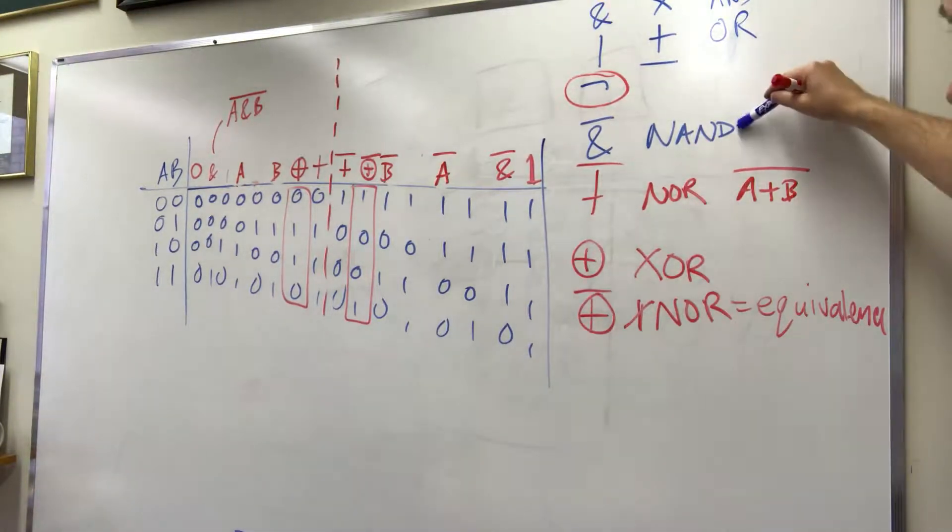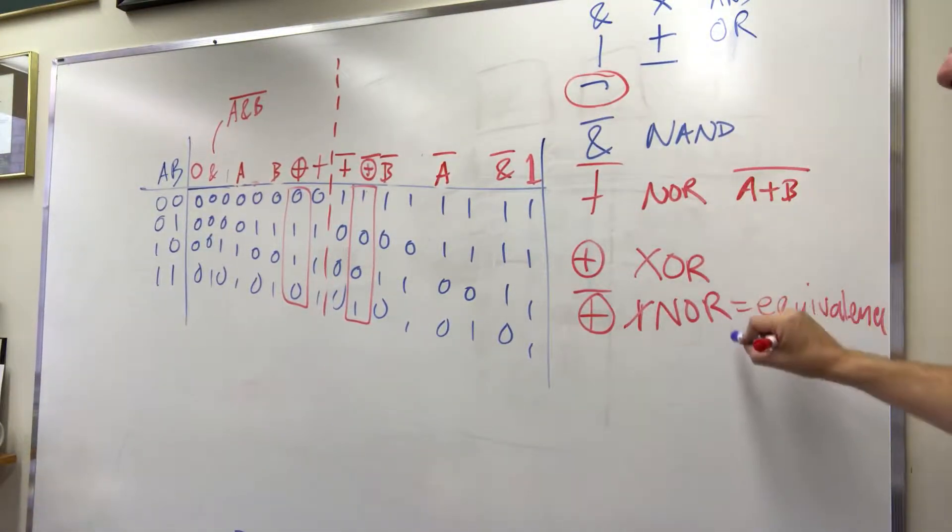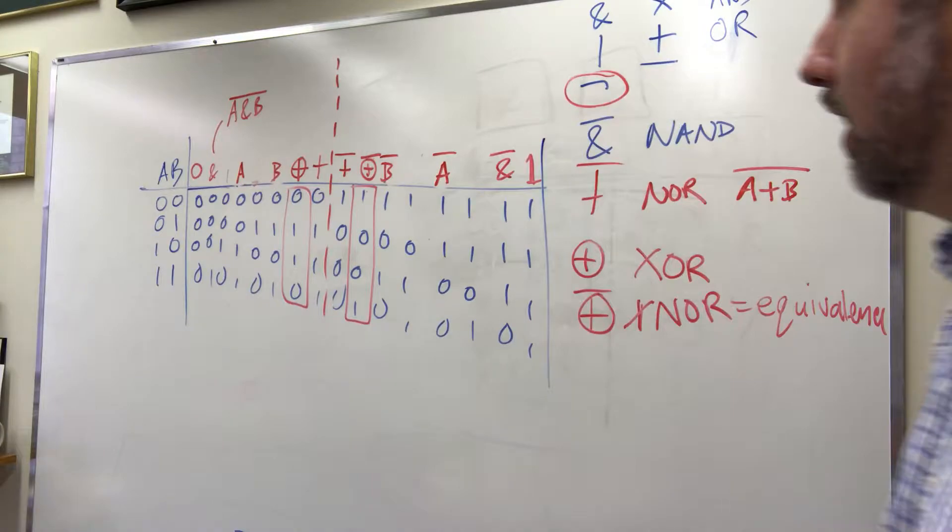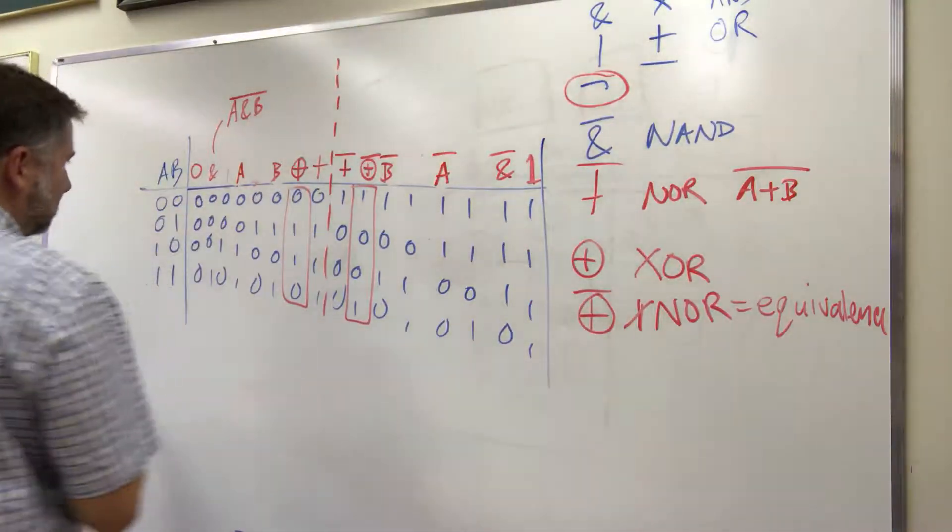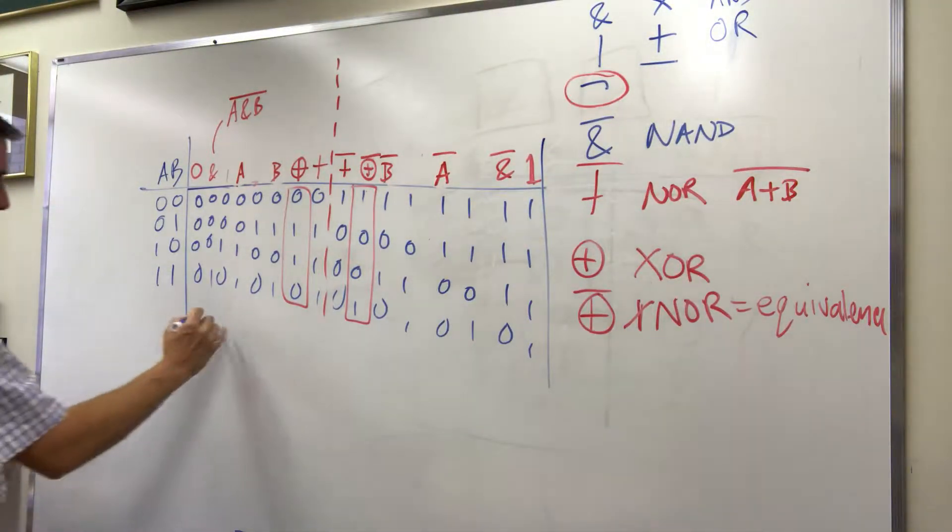So we've got AND, OR, NAND, NOR, exclusive OR, exclusive NOR. We've got inversion. There's a few other ones. These ones here are a bit more special.